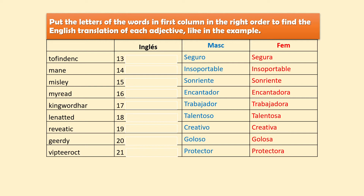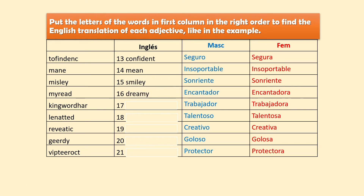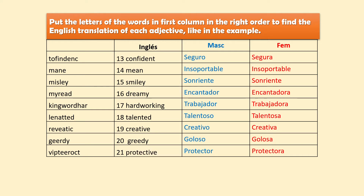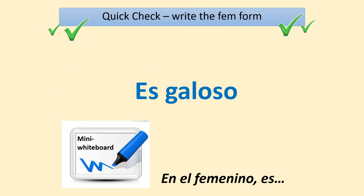Number 13: 'seguro/segura' — the letters create 'confident.' 'Mean' — we're actually looking for 'insoportable'; think of the opinion phrase 'no soporto' meaning 'I cannot stand.' 'Sonriente' means smiley; 'encantador' means dreamy; 'trabajador' — seen a lot in Theme 3 — means hardworking; 'talentoso' means talented; 'creativo' means creative; 'goloso' means greedy; and 'protector' means protective, for example how parents are protective of their child.